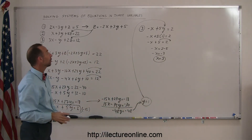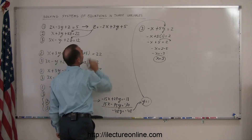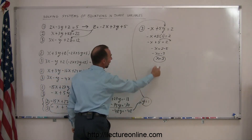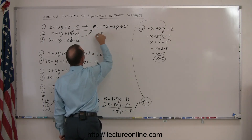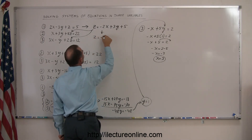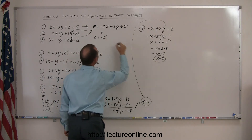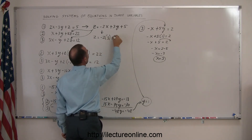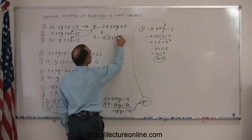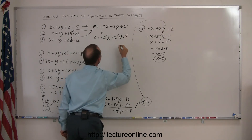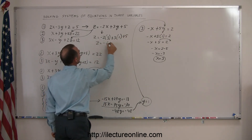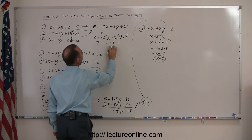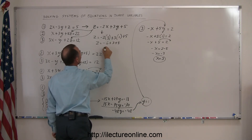Finally, I go back to my first equation and plug in the values for y and x. So z equals minus 2 times x, which is 3, plus 3 times y, which is 1, plus 5. So z equals minus 6 plus 3 plus 5. Three plus 5 is 8, minus 6 means z equals positive 2.